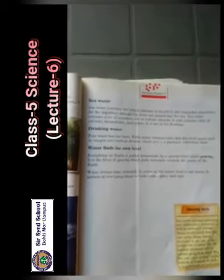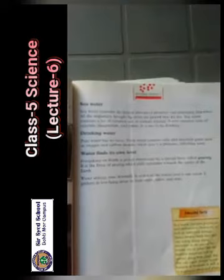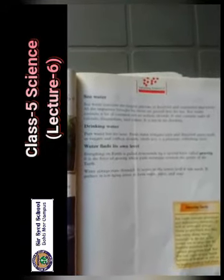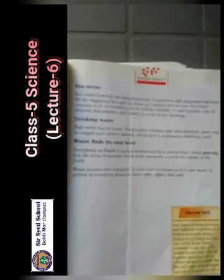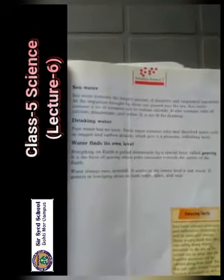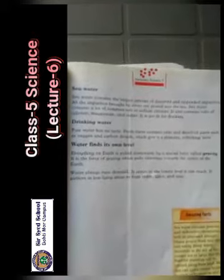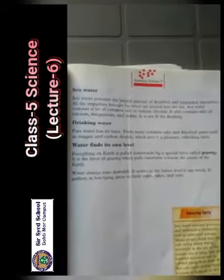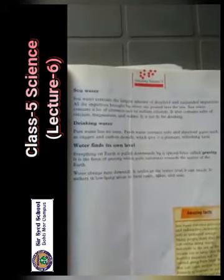Page 39. Sea water: sea water contains a large amount of dissolved and suspended impurities. All the impurities from rivers are poured into the sea. Sea water contains a lot of common salt, or sodium chloride. It also contains salts of calcium, magnesium and iodine. It is not fit for drinking.